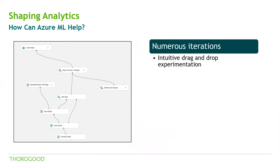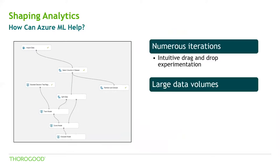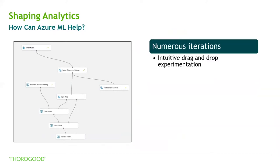First off, with the numerous iterations — if you've ever created analytical algorithms or statistical models before, you'll be familiar with not getting it right first time. In an approach like this, you need tools that will help you move as quickly as you can. In Azure ML Studio, the intuitive drag-and-drop experimentation interface lets you easily make changes to models as you go through. In the Service, there are continuous integration and continuous development tools. All of this is designed to keep your analysis in a state where you can make changes, make tweaks, and rerun to see how those changes affect the final model.